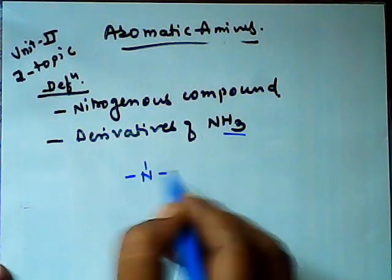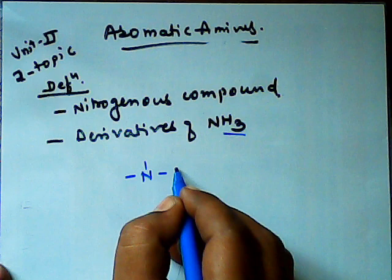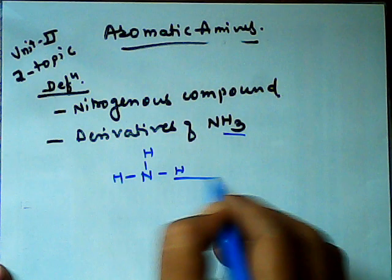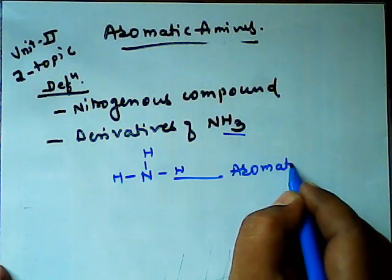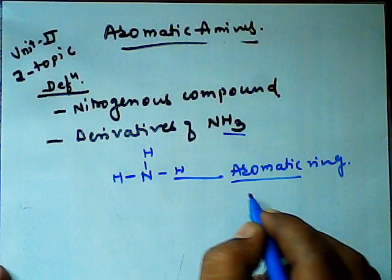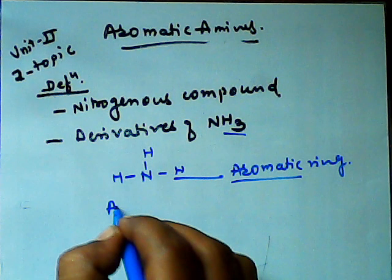Minimum one hydrogen is replaced by Aromatic ring and similar Aromatic structure. If we write the general formula, Ar-NH2. This is the derivative of Ammonia.